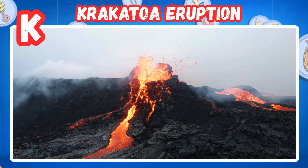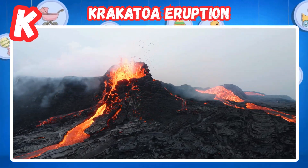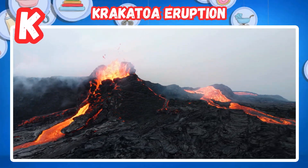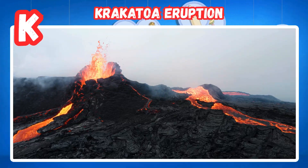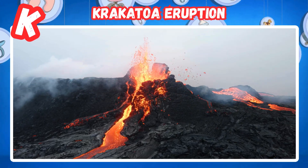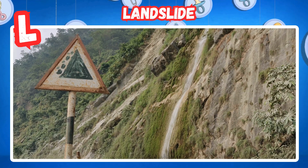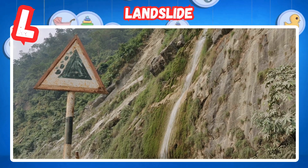K is for Krakatoa eruption. A famous volcano erupts violently. Ash darkens the sky.